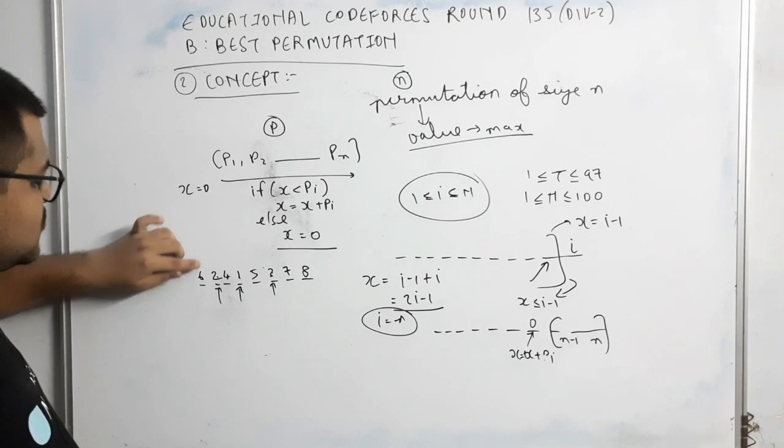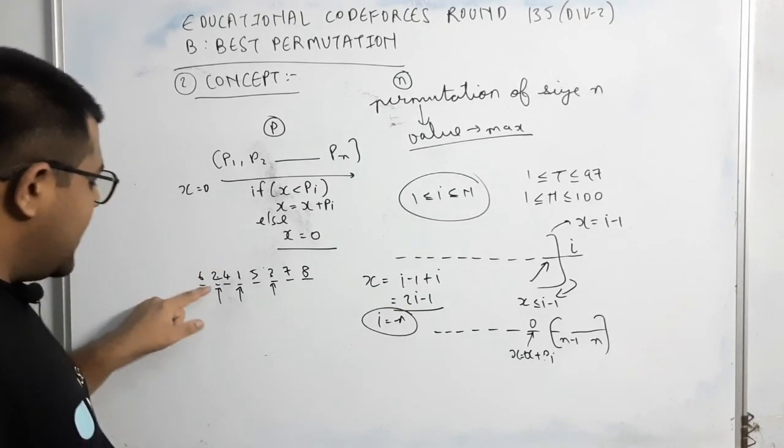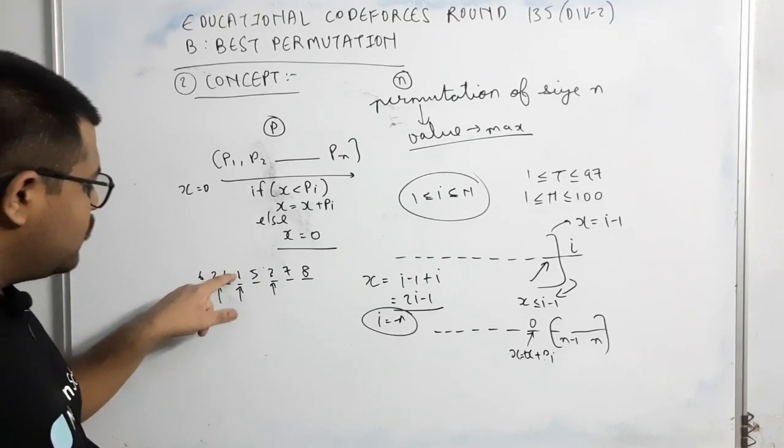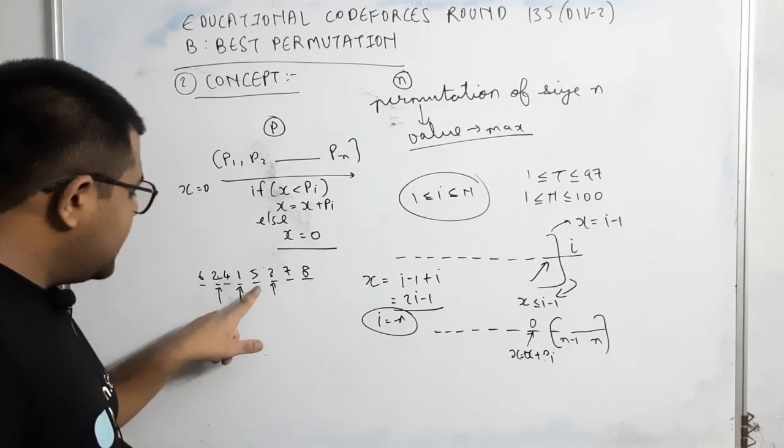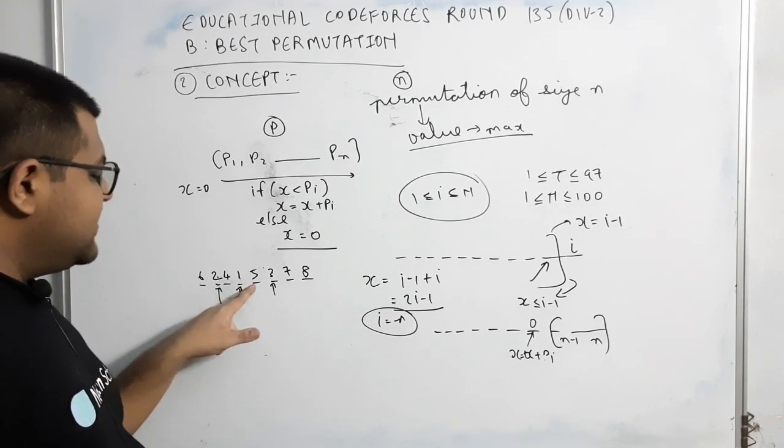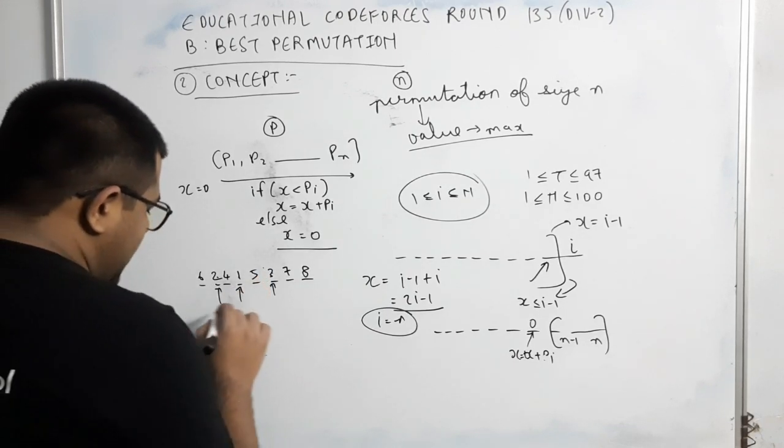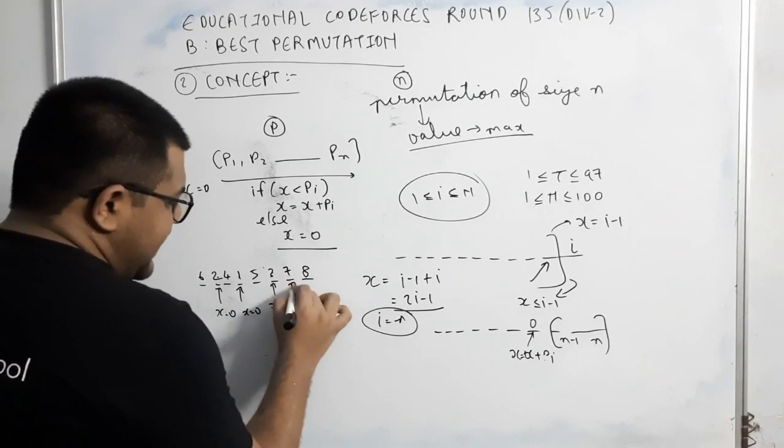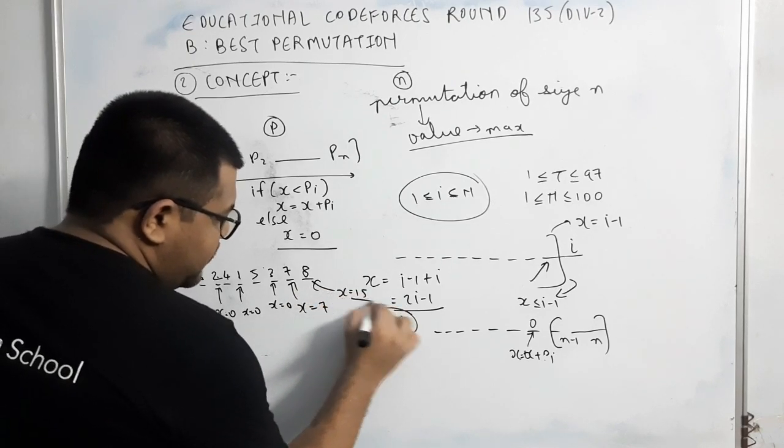For example, x equal to 6. 6 is less than 2? x equal to 0. Now, यहां पे 0 हो गई, तो यह value x में add हो जाएगी. So, x equal to 4. Now, 4 is greater than 1. So, यहां पे x की value वापस 0 हो जाएगी. Again, x is 0. So, this will be added. So, x equal to 5. Now, 5 is greater than 3. So, यहां पे x की value वापस 0 हो जाएगी. इससे क्या होगा? Here, x would be equal to 7. And in the last step, x would be equal to 15.